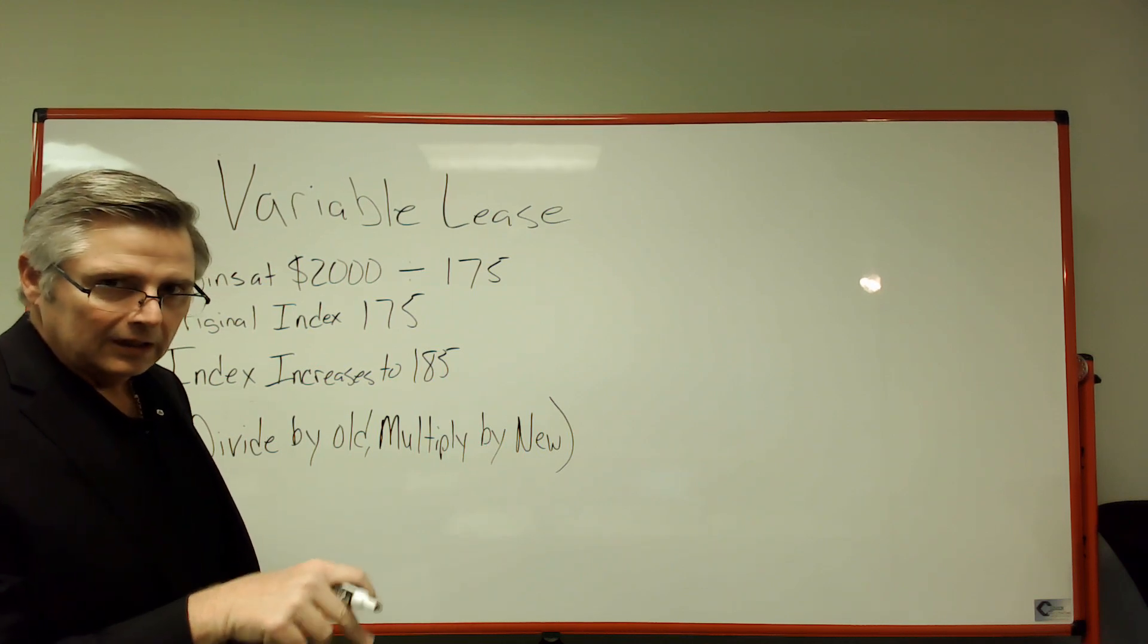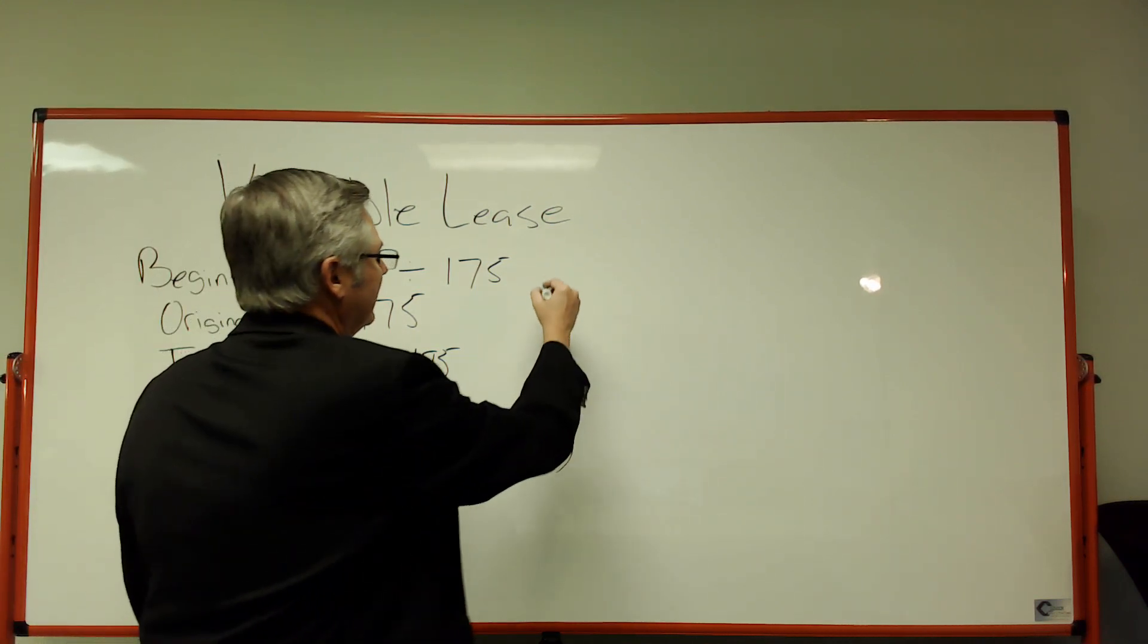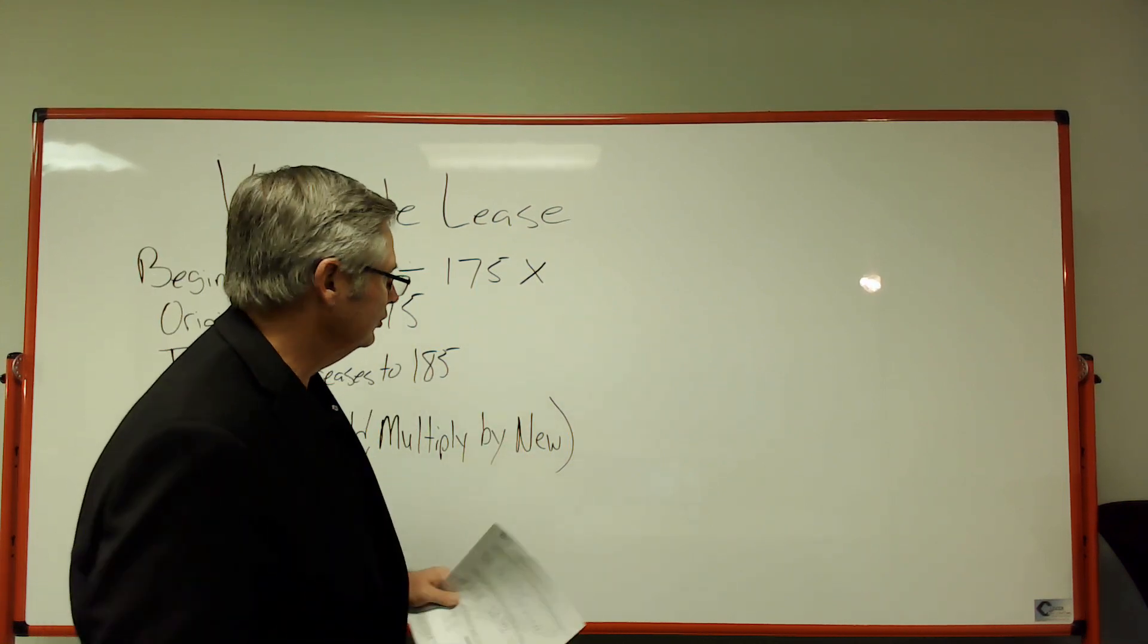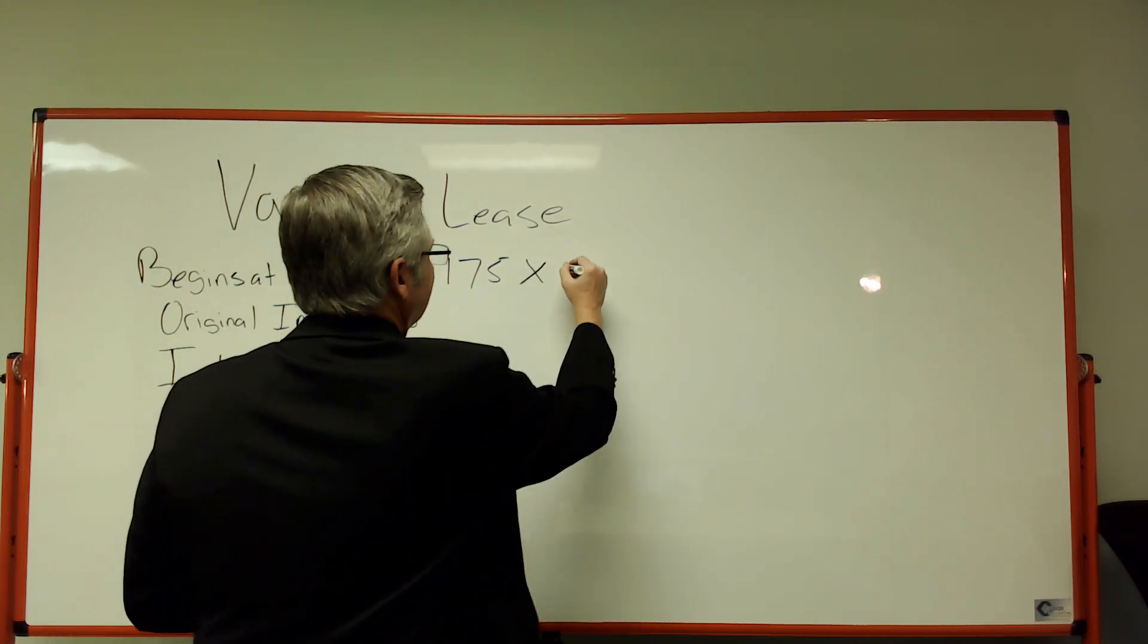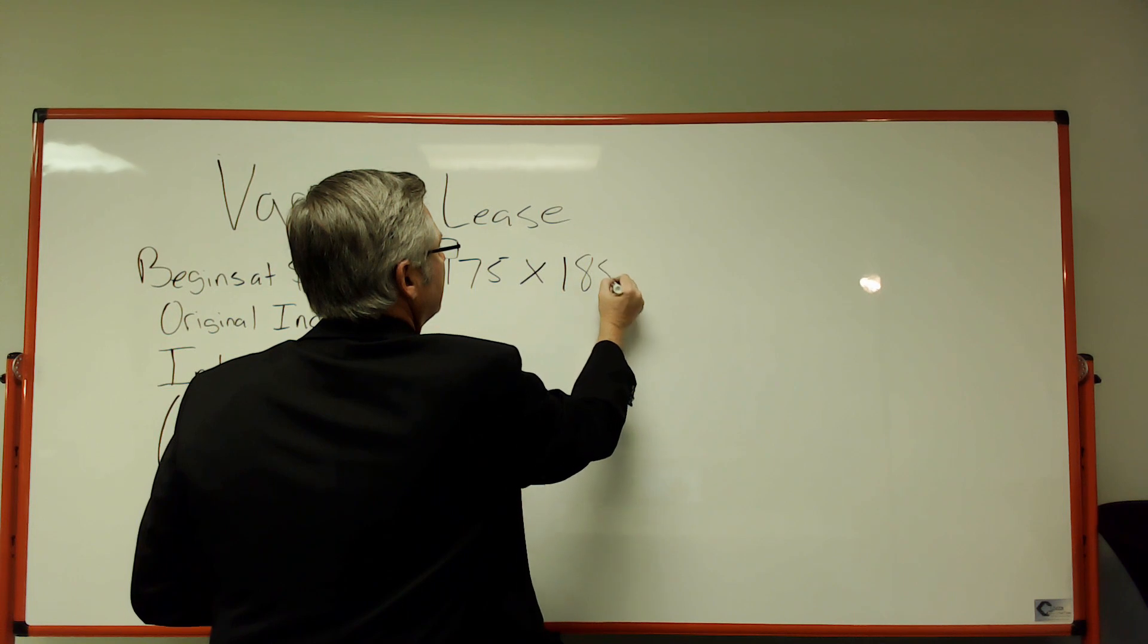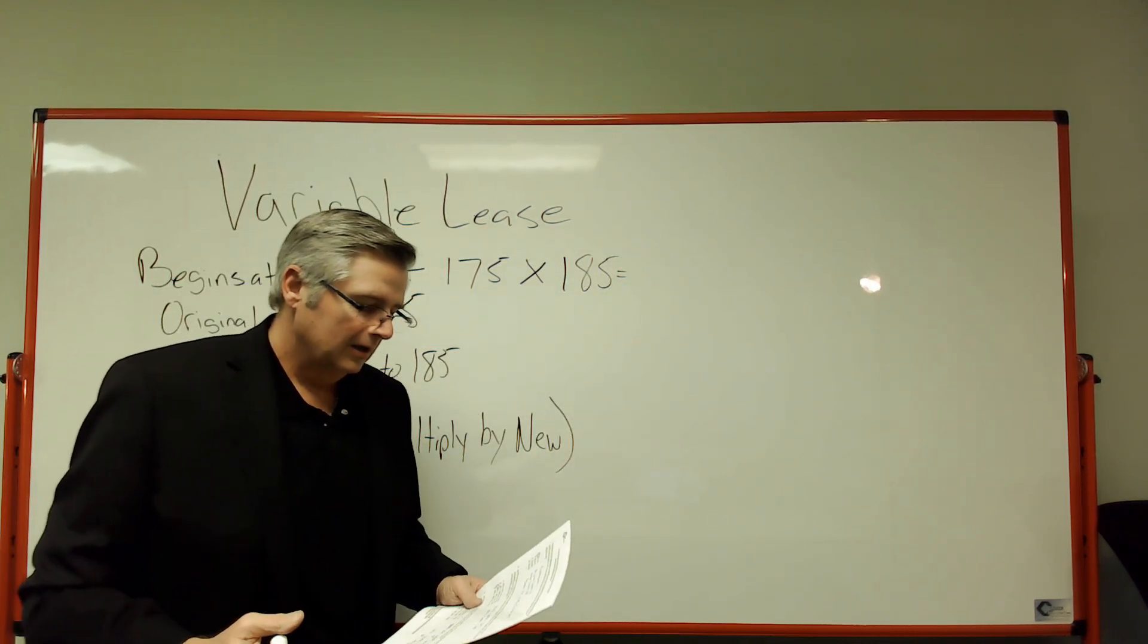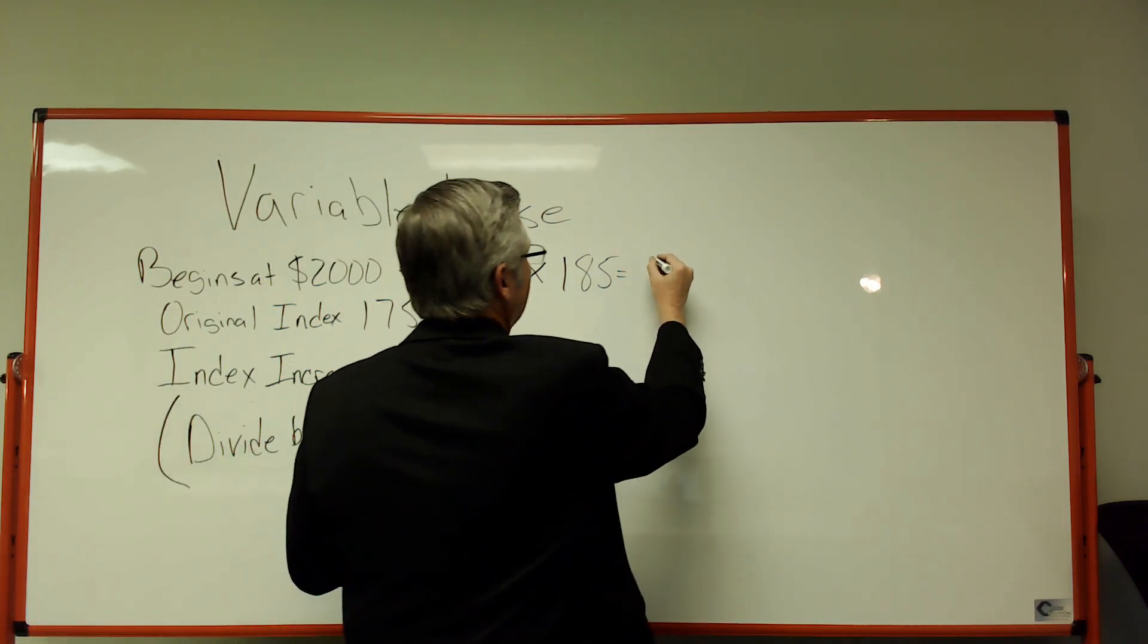Just take 2000, divide by 175, and then hit the multiply button—that's the X there—multiply times 185. So what happened is the index went up, so the rent should go up. That comes out to $2114.